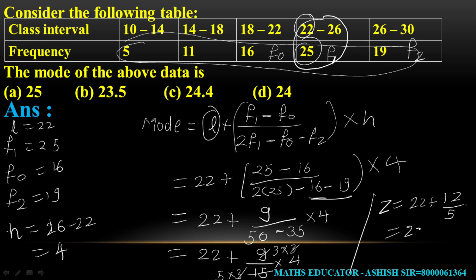22 plus 2.4 equals 24.4. This is the answer, so option C is correct.